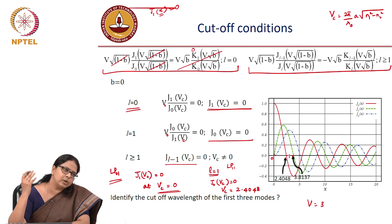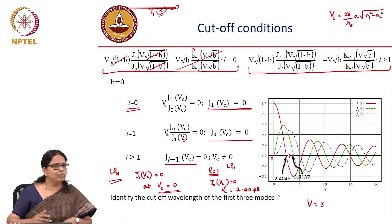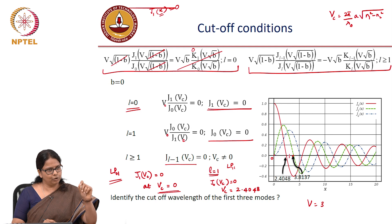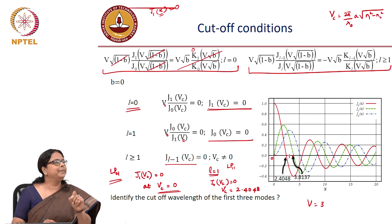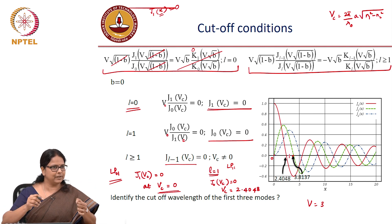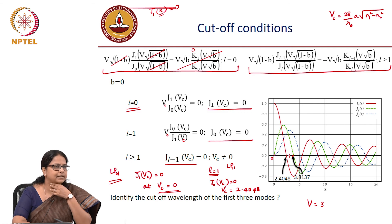In order to find the supported modes or the profiles of the supported modes, you need to know all the allowed values of B. You have to solve the transcendental equation, get the allowed values of B, and from that you can calculate what the modal profiles are.